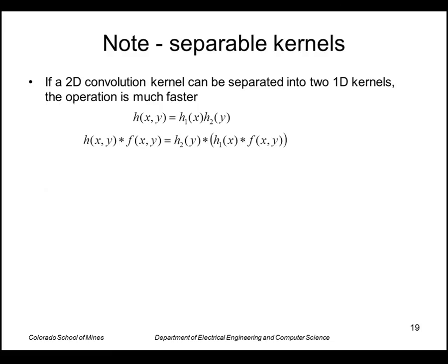Finally, the Gaussian can be separated into two one-dimensional kernels, which makes convolution easier. If we can write a filter as a product of two filters, one in x and one in y, we can apply a one-dimensional filter in x followed by a one-dimensional filter in y, which is faster.